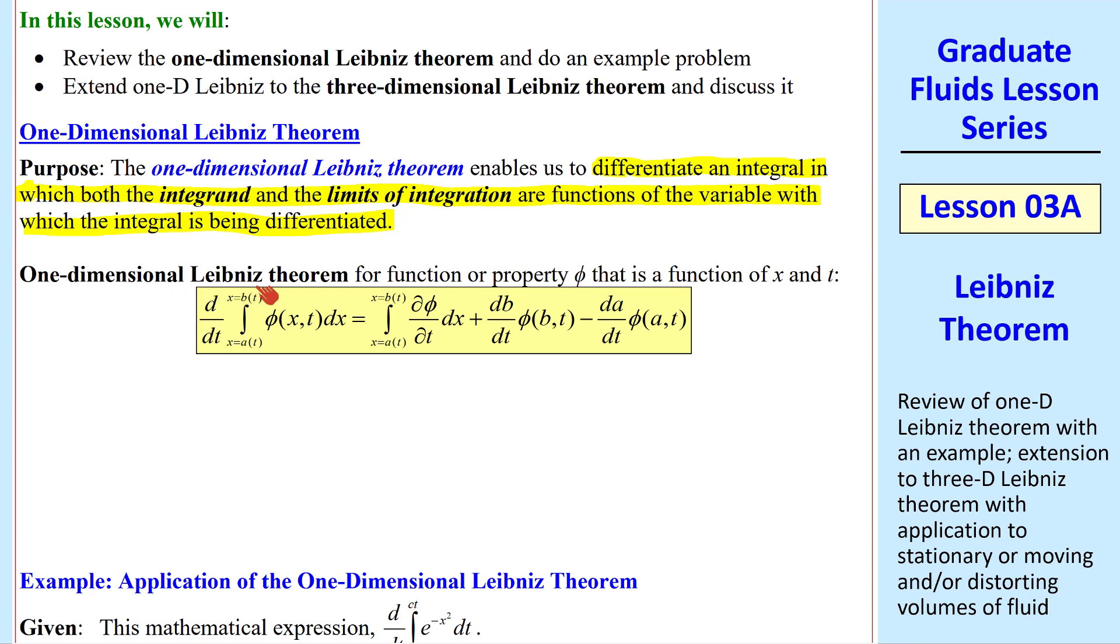Here's the 1D Leibniz Theorem for some arbitrary function or property phi. Note that phi is a variable of x and t, as we wrote here. The integral is with respect to x, and the derivative is with respect to time. Leibniz says that this derivative of this integral is equal to this integral, where we put in the two limits. Notice that they are functions of time, del phi del t dx, plus these two terms, the derivatives of these limits a and b with respect to time, of phi evaluated at b(t) and at a(t).